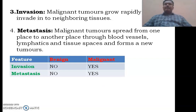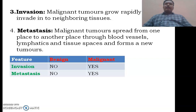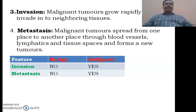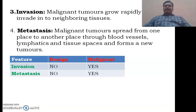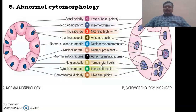The third characteristic is invasion. Benign tumors do not invade into neighboring tissues, but malignant tumors will invade neighboring tissues and cause damage. And metastasis is the movement of a tumor from one place to another place, forming a secondary tumor. For example, if there is a tumor in the toe, it will spread through blood vessels or lymphatic vessels and form a secondary tumor in the thigh, and from there it may spread to the lungs. This movement from one place to another is considered metastasis. Invasion and metastasis are not seen in benign tumors but are observed in malignant tumors.